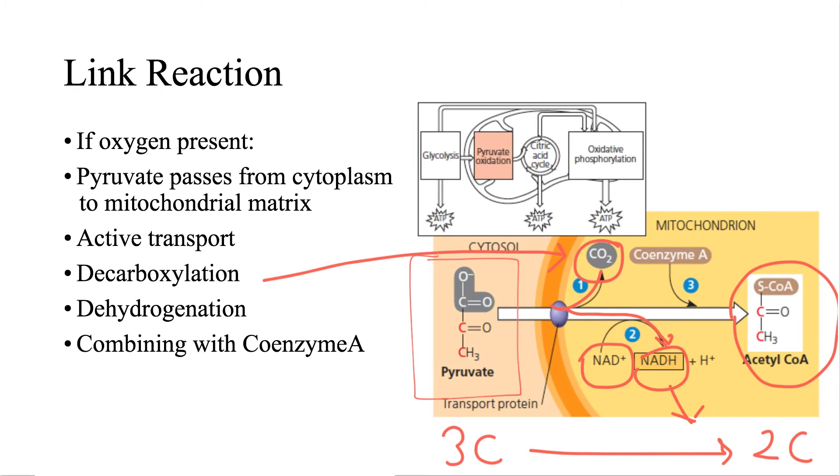The remaining compound combines with coenzyme A. This coenzyme A is a complex molecule composed of nucleoside, which means adenine plus ribose, and a vitamin, a B vitamin, to be exact pantothenic acid. So eventually acetyl-CoA is formed. I need to remind you that fatty acids from fat metabolism may also be used to produce acetyl-CoA.